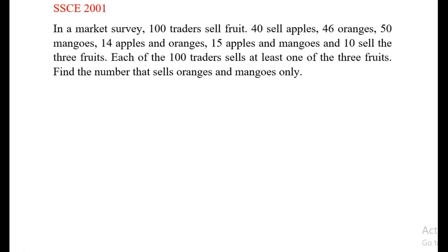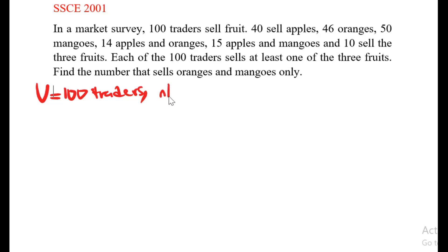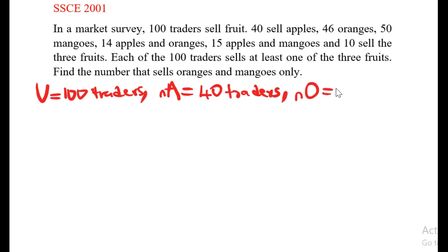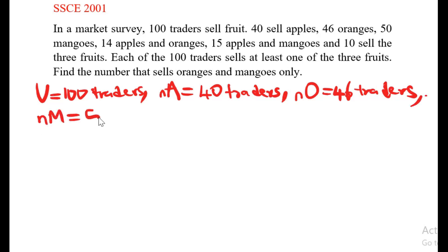Writing down our parameters: the universal set is 100 traders. The number of traders that sell apples — let's use A to represent apple — is 40 traders. Oranges, O, is 46 traders.